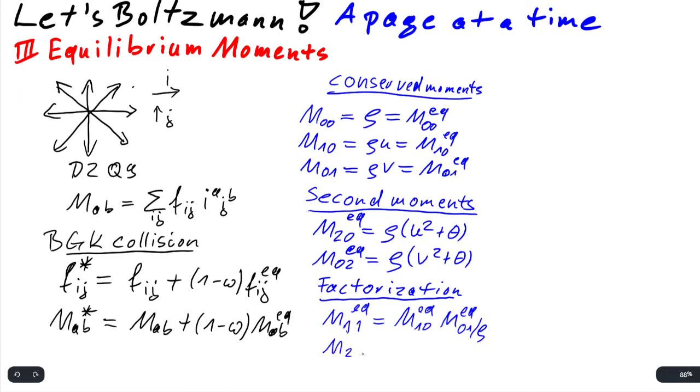Equally, we can write M_2,1 equilibrium as M_2,0 equilibrium times M_0,1 divided by rho normalization. The same for M_1,2 equilibrium equals M_0,2 equilibrium times M_1,0 equilibrium normalized by rho.